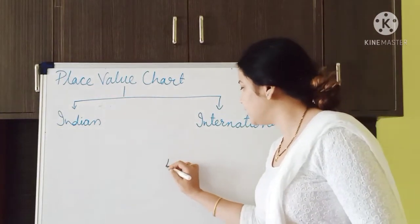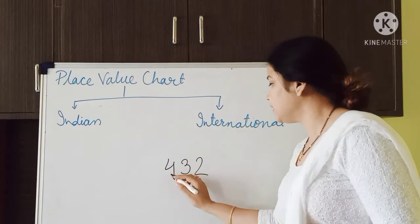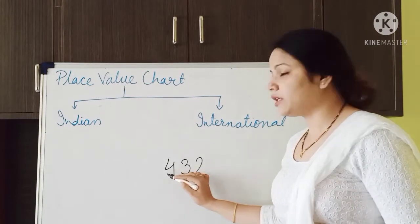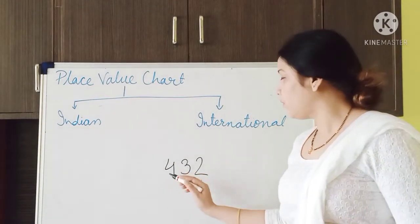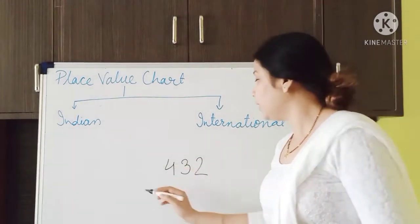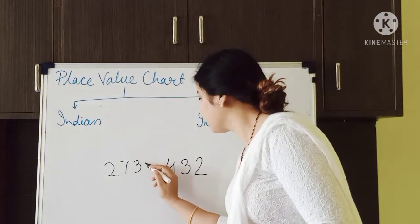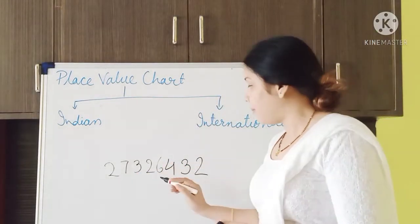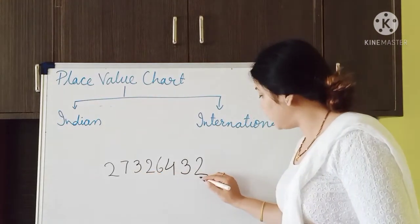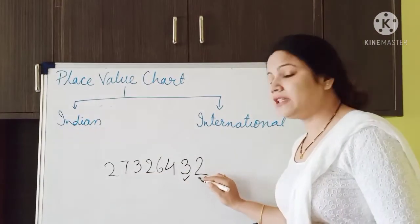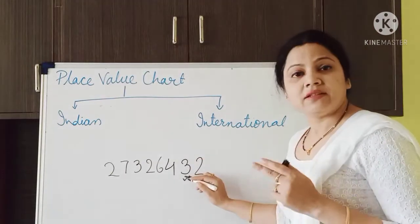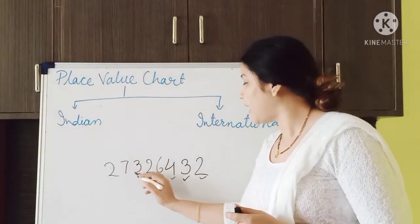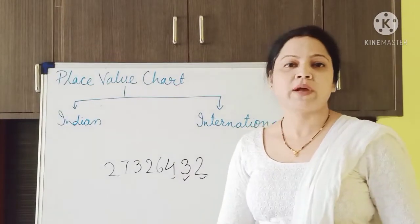Suppose I am writing a 3-digit number that is 432. This is 1's position, 10's position, and 100's position. We will read this as 432. But what if we are dealing with a larger number? To know the value of each digit — what is the value of this? The value of 2 is 1's, the value of 3 is 10's, and the value of the next digit is 100's. So to know the value of each digit, we need a place value chart.